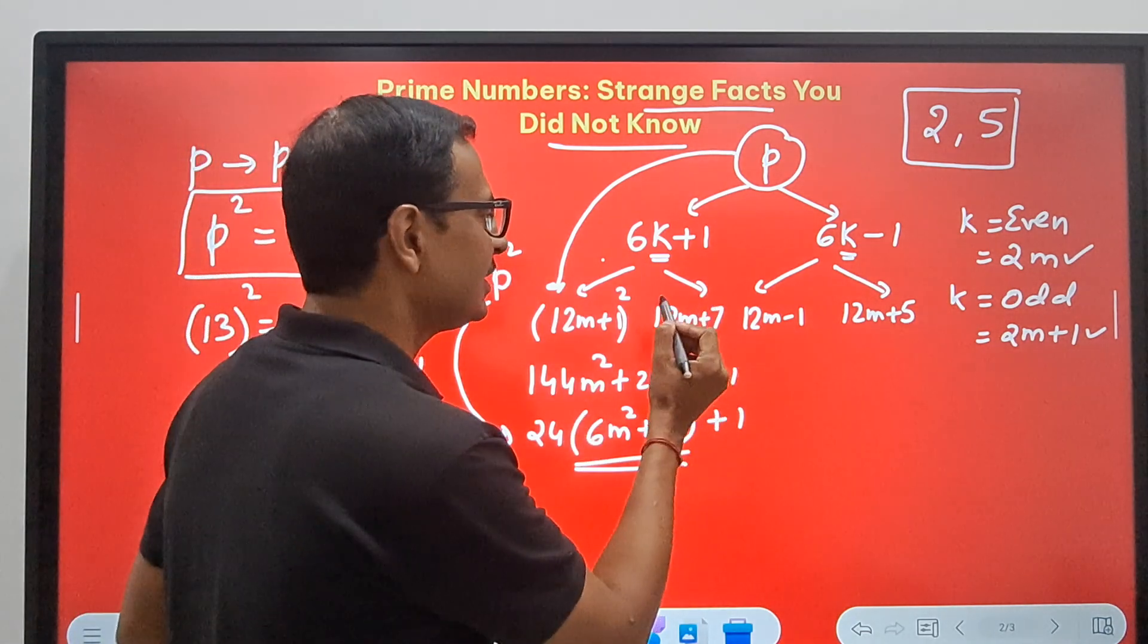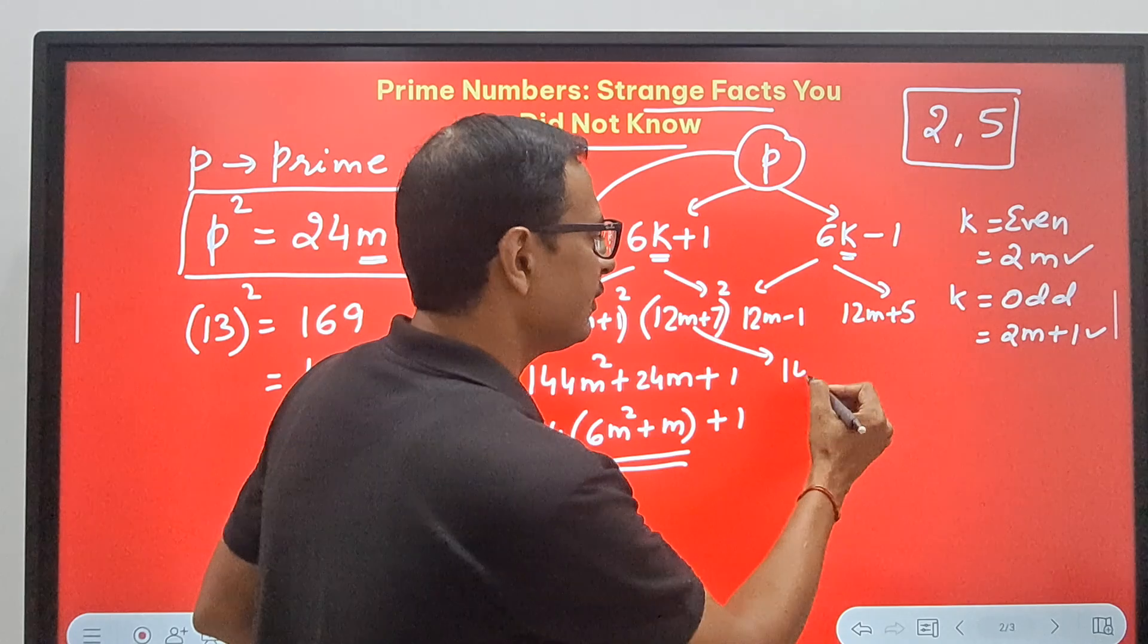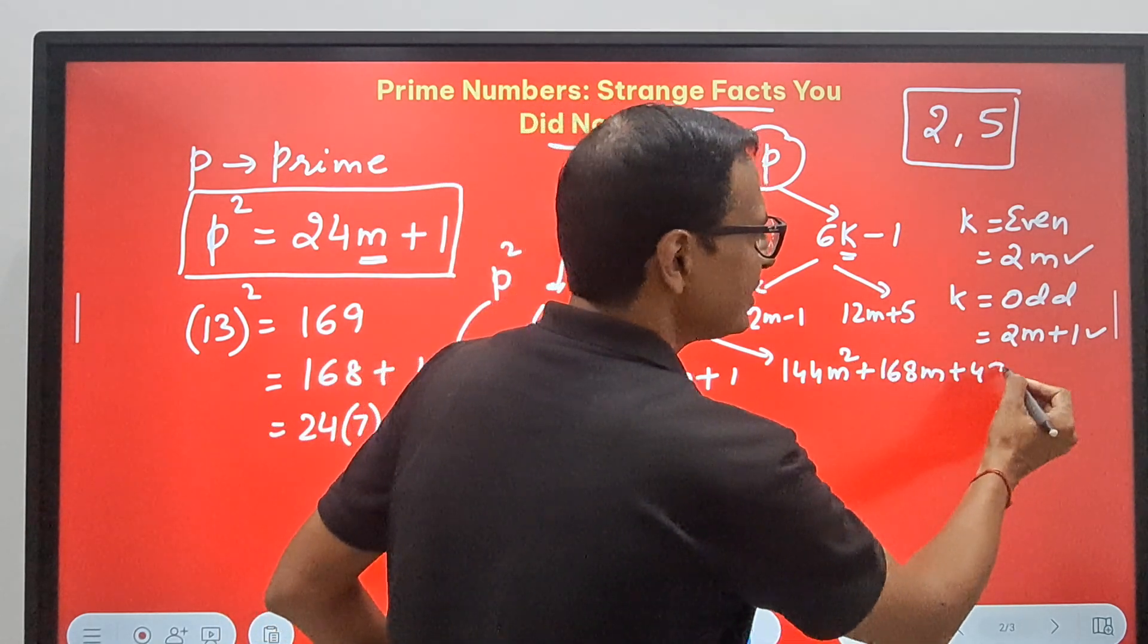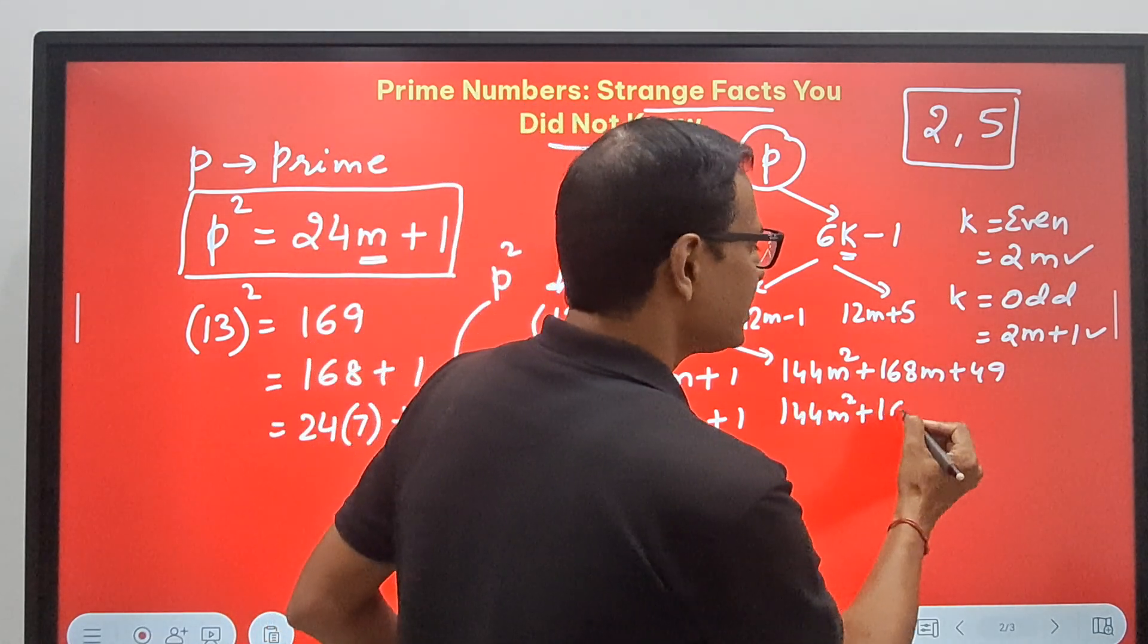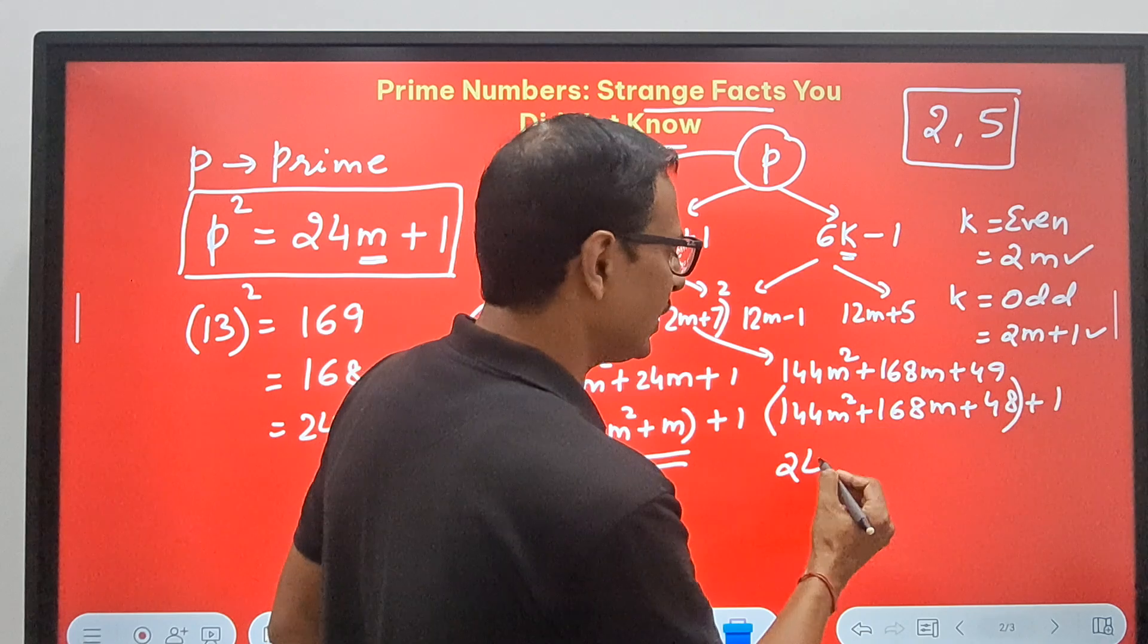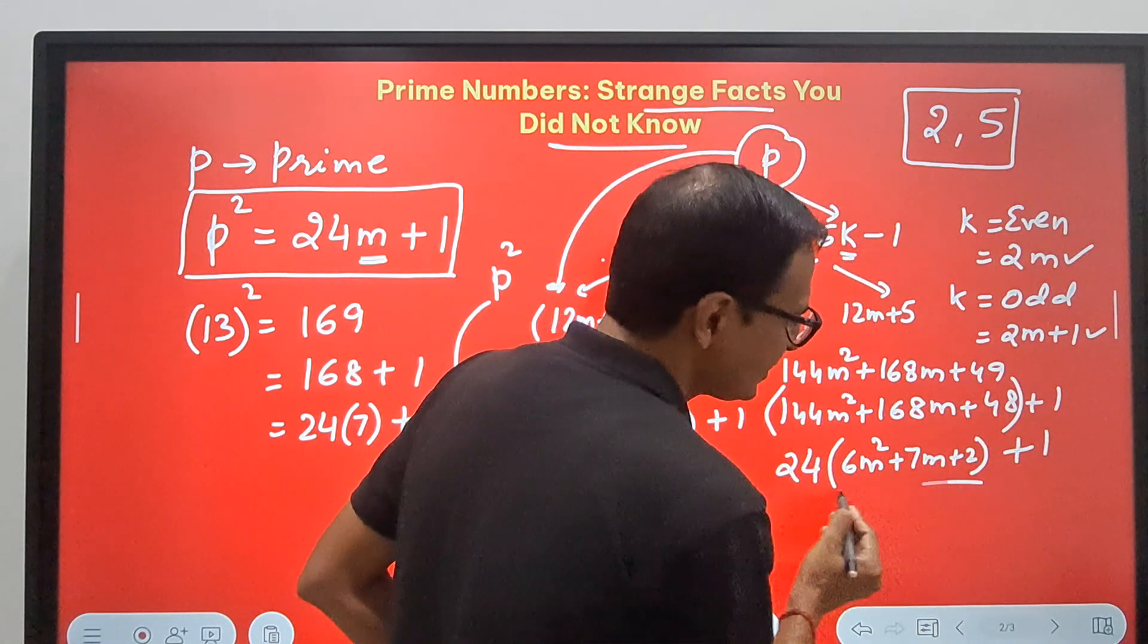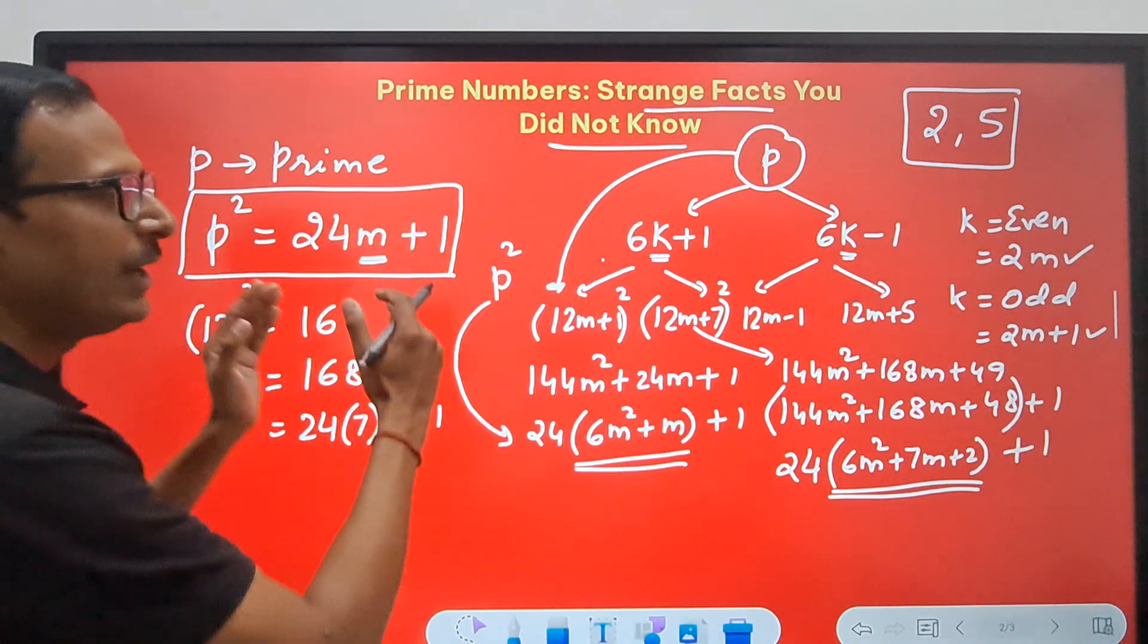Likewise, if I take this part, 12m plus 7 whole square, you can again do it. You can expand it: 144m square, and then 12 times 7 is 84, double is 168, so plus 168m, and then 49, 7 square is 49. So 144m square plus 168m, and then this becomes 48 plus 1. Between these three terms, I can take 24 common, which gets me 6m square plus 7m plus 2, and a plus 1. See, 24 times something plus 1. Again, that rule works for this also.